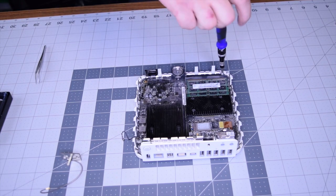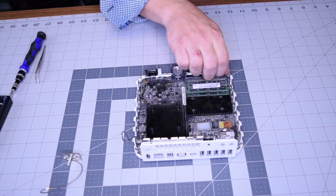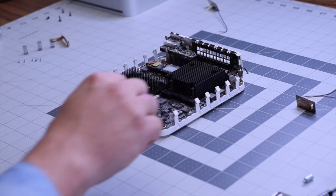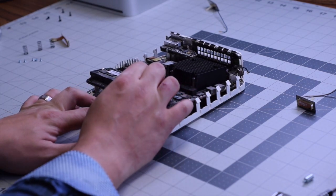Now with the T15 screwdriver, go ahead and remove that last post. This post secures the logic board to the frame. Once that's removed, you can go ahead and start lifting up on the board from the back and then just pull it right out of the socket like that.